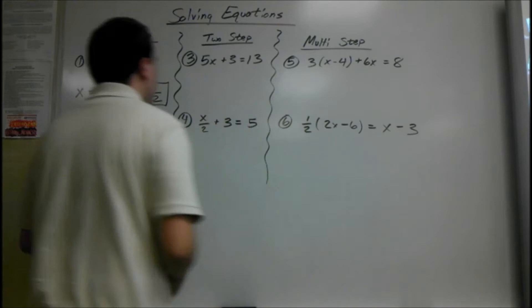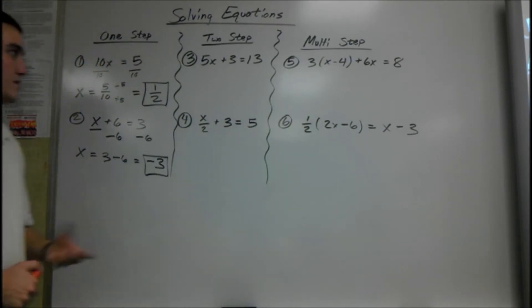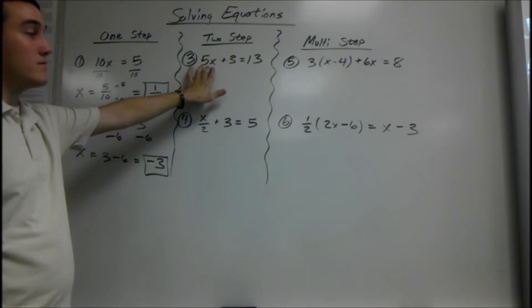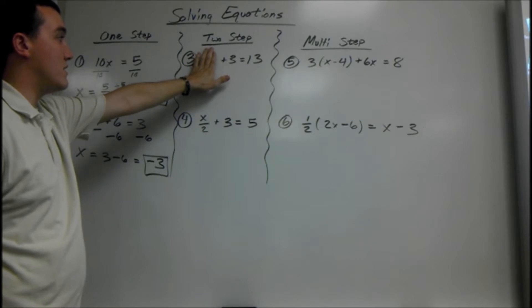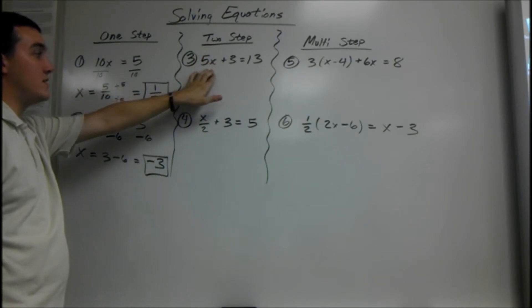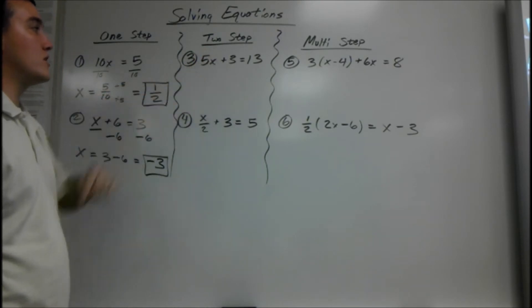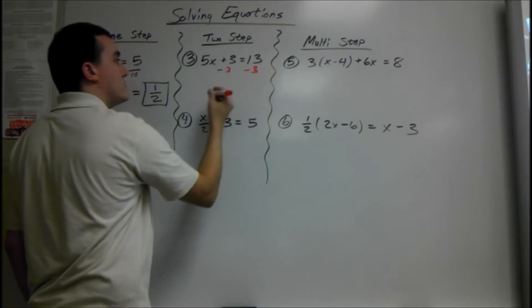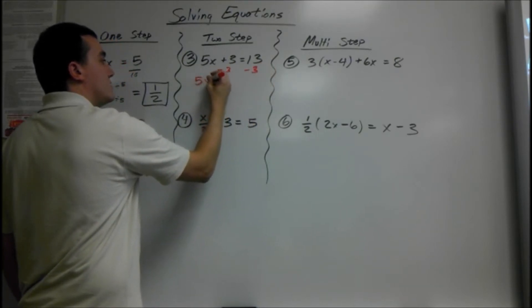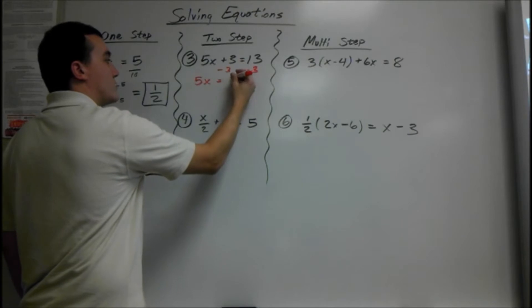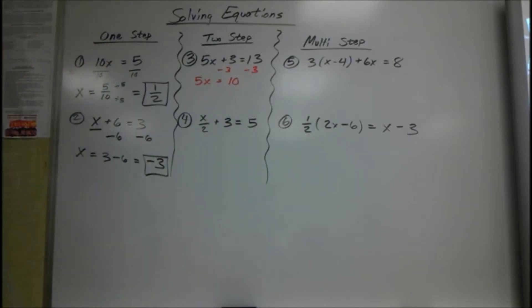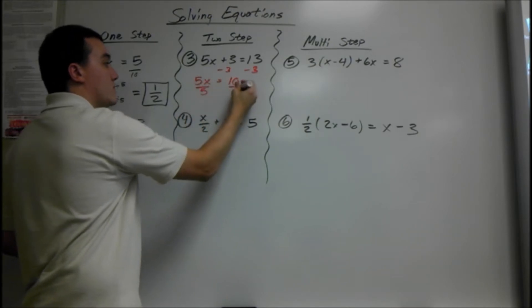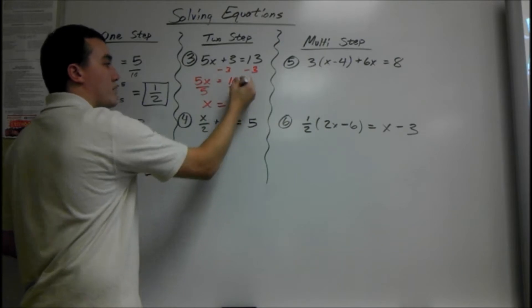Two-step equations — we have to do two steps to solve for them. 5x and x are going together, so the first thing you want to do is get the 5x term by itself. Always isolate the term with the x in it first, then solve for x after. So first we get rid of the 3. Since it's positive 3, we minus 3. So we have 5x equals 13 minus 3 is 10. Then since we are multiplying by 5, we divide by 5 from both sides. So x equals 10 divided by 5, which is 2.